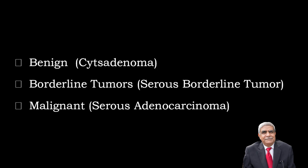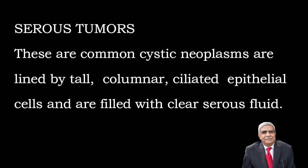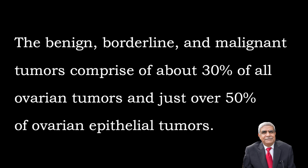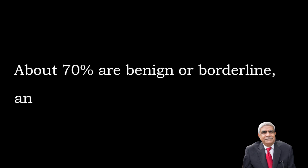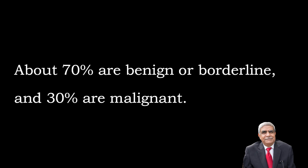Serous tumors can be benign, borderline, or malignant. These are commonly cystic neoplasms lined by tall columnar ciliated epithelium and are filled with serous fluid. The borderline, benign, and malignant types account for about 30 percent of all ovarian tumors. Benign and borderline types form about 70 percent of serous tumors, while malignant tumors are around 30 percent.